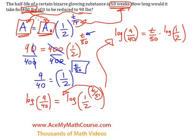I want to isolate t. I'll multiply both sides of the equation by 50 to get rid of this 50 here. So I get 50 times log of 9 over 40. The 50s cancel out. So t times log of one-half equals 50 log of 9 over 40. To isolate t, I'll divide both sides by the log of one-half.